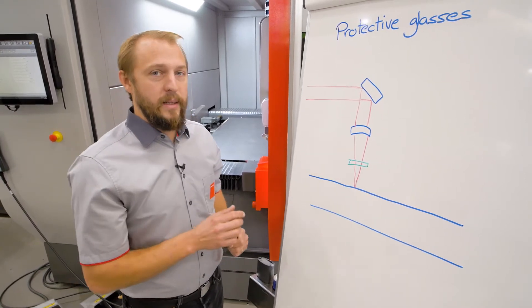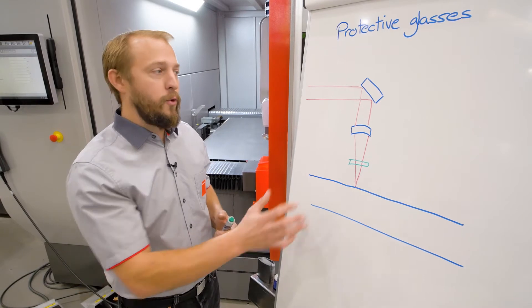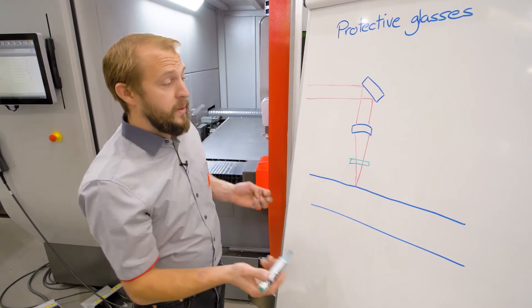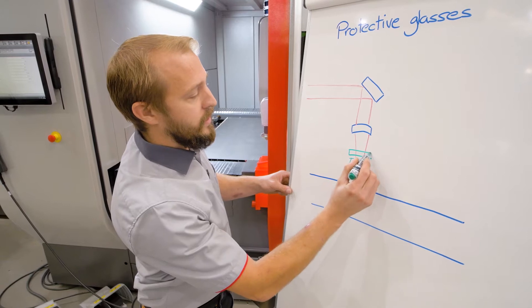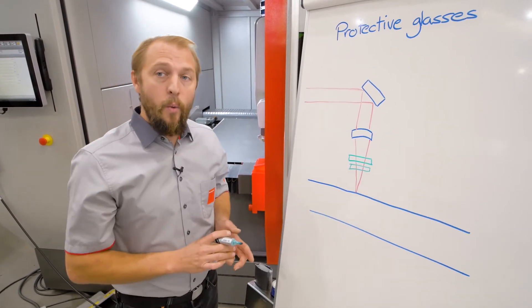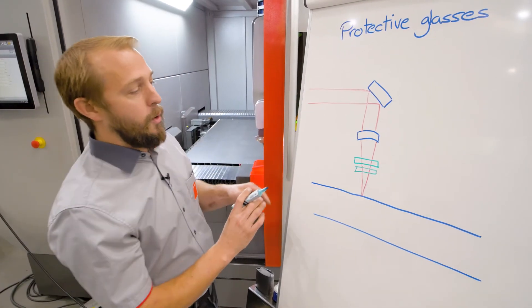Of course, while replacing this protective glass, there is still a risk of contamination of the optical room. That's why we added here a second protective glass which is really protecting our optical room.